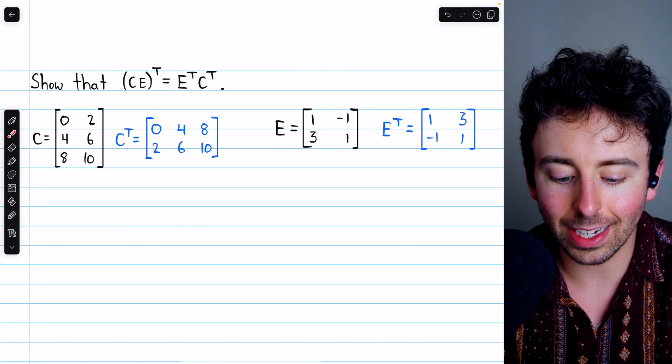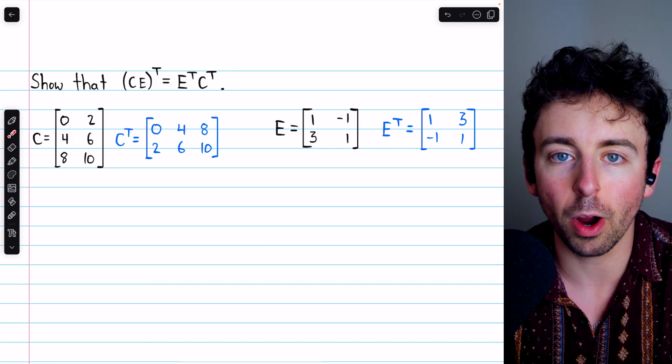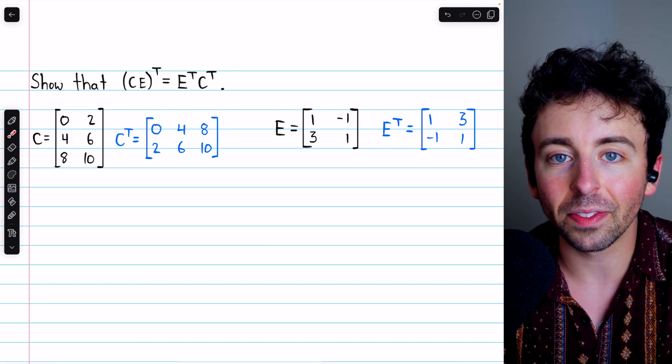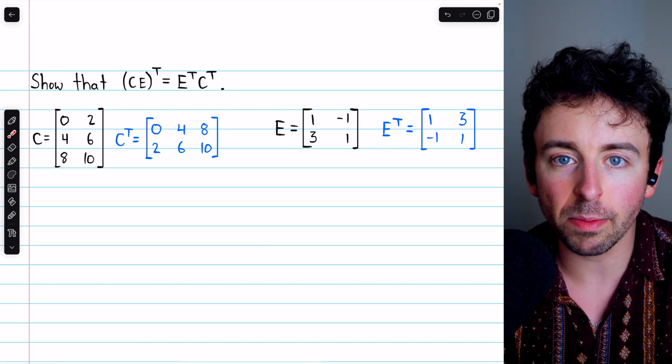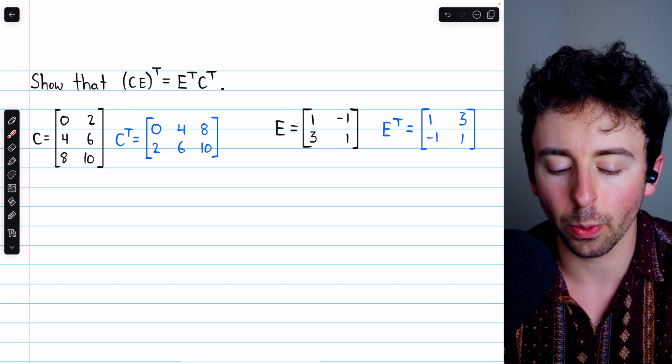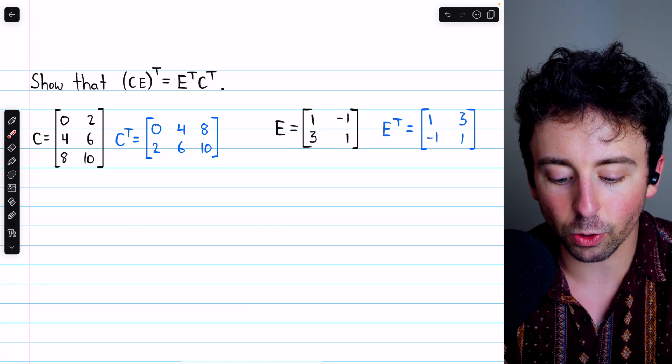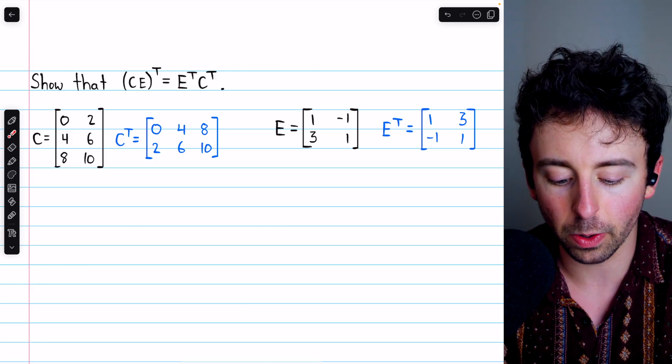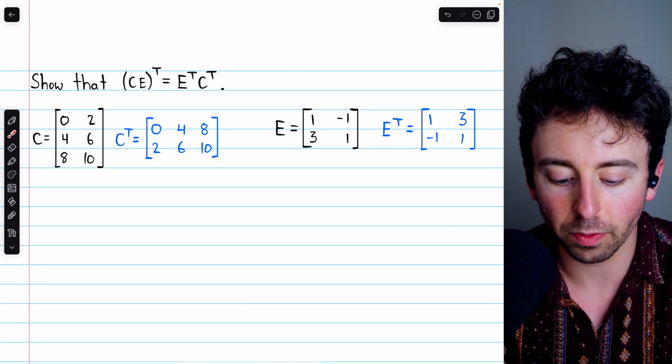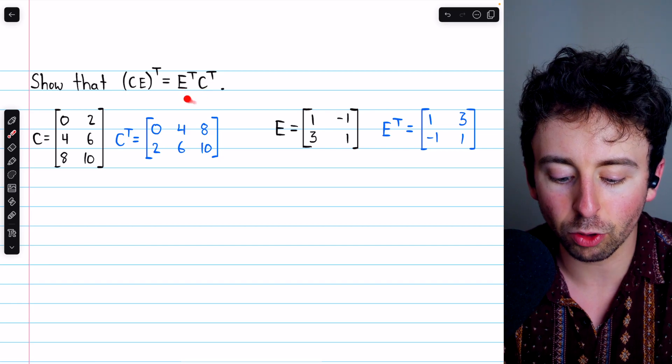Lastly, let's touch on how to take the transpose of a matrix product. How it works is that you have to take the transpose of the component matrices and reverse the order. So for example, (CE)^T is E^T C^T. So we've taken the transpose of those two matrices, and we've swapped the order.